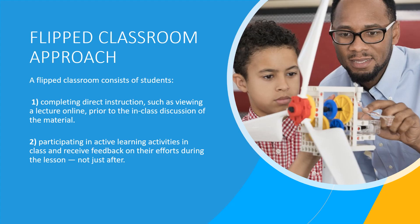In a flipped classroom, students take a much more active role than in a traditional model. Students develop a familiarity with the material via videos or other instructional materials made available outside of the classroom or in their digital learning environment. This pre-work allows them to control their learning more, interact more with other students, and set the pace for discussions during live class sessions. The intent is for students to see the material beforehand — also called first exposure learning — so they can learn concepts at their own pace and focus more on engaging hands-on activities.